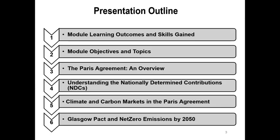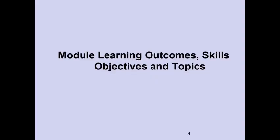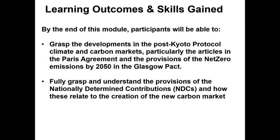Our outline is as follows: we look at the Module Learning Outcomes and Skills Gained, Module Objectives and Topics, the Paris Agreement and Overview, Understanding Nationally Determined Contributions — NDCs — Climate and Carbon Markets in the Paris Agreement, and the Glasgow Climate Pact and Net Zero Emissions by 2050. Let's move on to learning outcomes, skills and objectives.